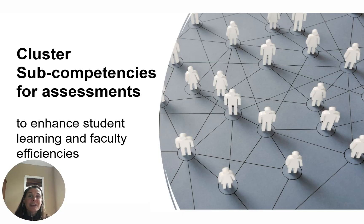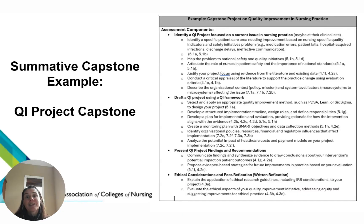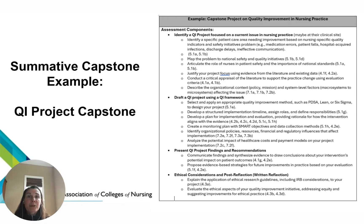At the University of Michigan, we designed a capstone quality improvement project that requires students to identify a clinical problem, create and implement a quality improvement plan, evaluate and present findings, all while reflecting on ethical considerations for practice improvement. This single assignment aligned with multiple course-specific objectives and allowed us to assess attainment of sub-competencies across three essential domains: scholarship for the nursing profession, quality and safety, and systems-based practice.